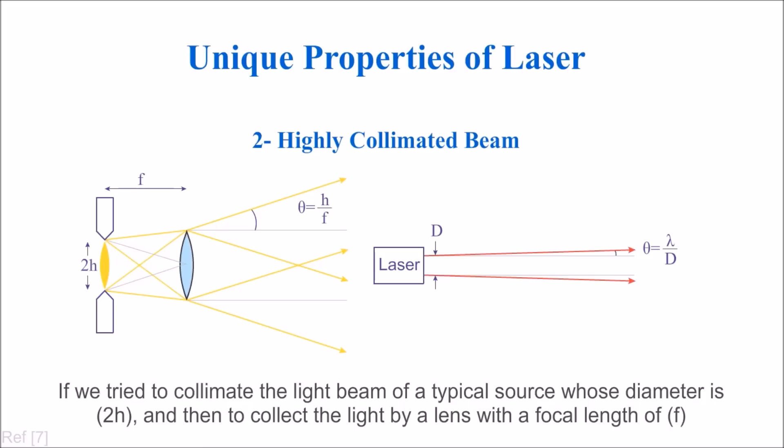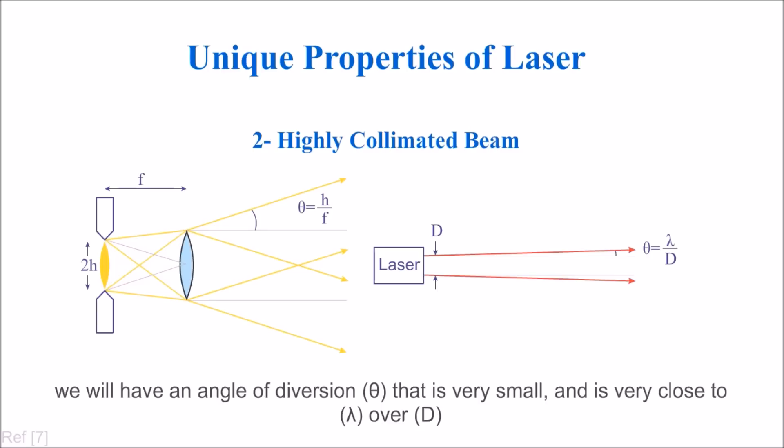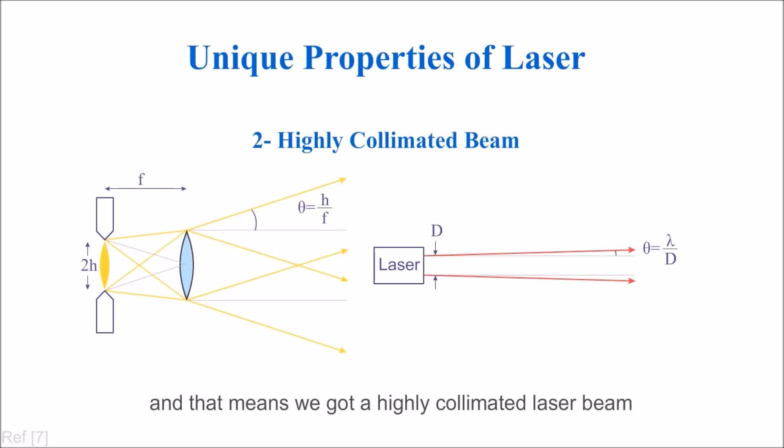However, if we have a laser source emitting a beam with diameter d, we will have an angle of divergence theta that is very small and very close to lambda over d. And that means we got a highly collimated laser beam.